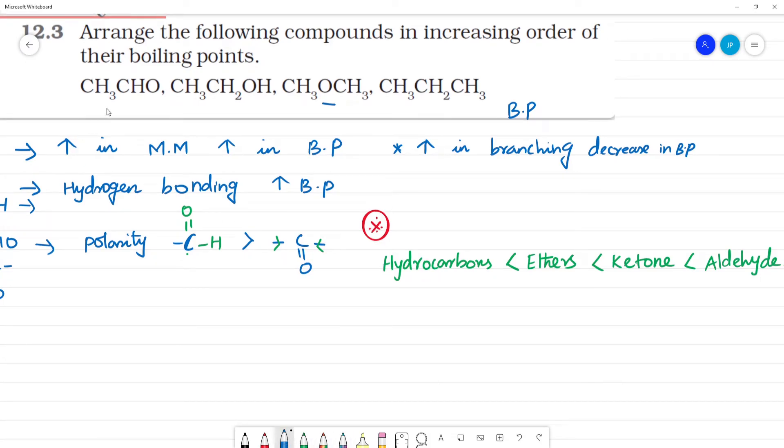What is this? This is ethanol. What is this? That is an aldehyde. This is ethyl alcohol or ethanol. Okay. This one is methoxymethane. Methoxymethane. Next is propane.